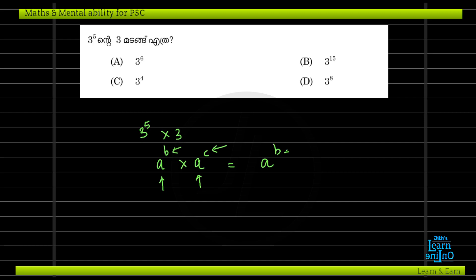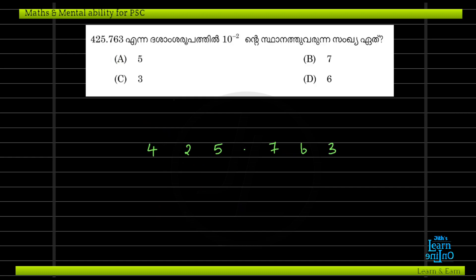How do we add powers? We will multiply 3 raise to 5 by 3 raise to 3. If we add the powers, it is 5 and 3 giving 8. Then we multiply and the answer is 3 raise to 6.